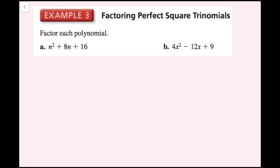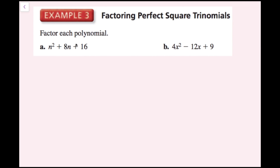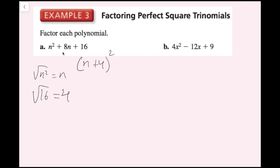For example 3, we're going to factor each polynomial. In part a, I have n squared plus 8n plus 16. We check whether the first term and last term are perfect squares — n squared and 16 are both perfect squares. The square root of n squared is n, and the square root of 16 is 4. Does 2 times n times 4 equal the middle term? Yes: 2 times n is 2n, times 4 is 8n. So this is a perfect square trinomial, and it factors as n plus 4 quantity squared.